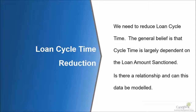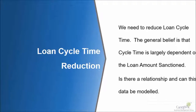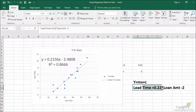We will work with the same example of loan cycle time, which is influenced by the amount sanctioned in the loan. If you recollect, we had initially fitted the line manually using the eyeballing technique — I did a graph, fitted the line, and got an equation. The equation I got was: 0.22 into loan amount minus 2.